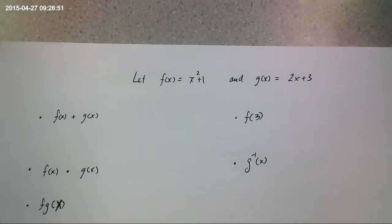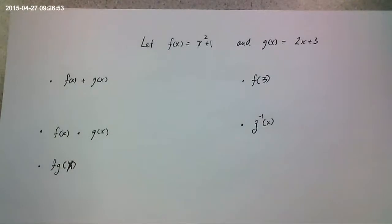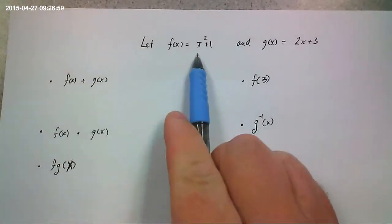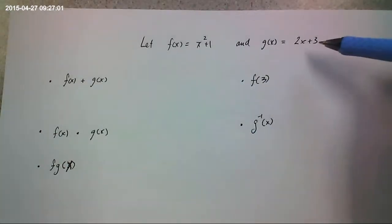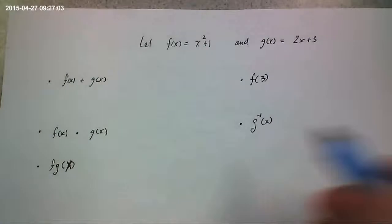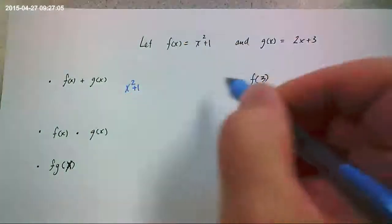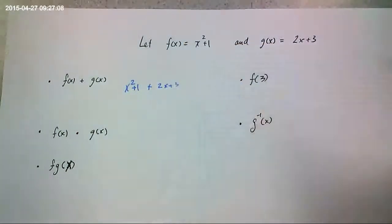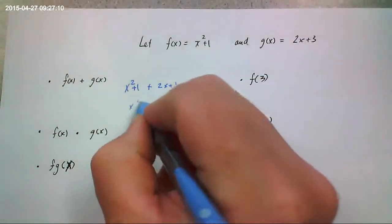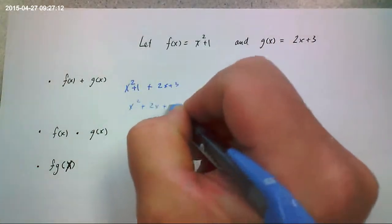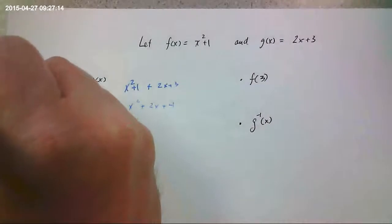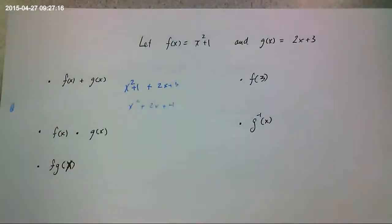Let's try a few. It's really simple. What this says right here is that you're going to take these two functions. f of x is x squared plus 1. g of x is 2x plus 3. And you're just going to add them. x squared plus 1 plus 2x plus 3. All you're doing is combining like terms. x squared plus 2x plus 4. Sorry for the poorly writing pen.